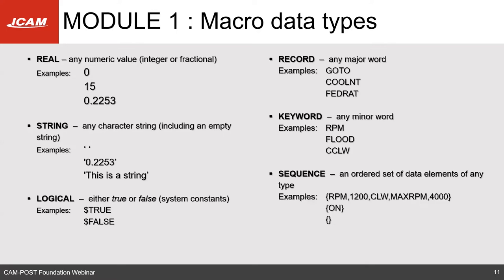ICAM supports several macro data types: reals, which can be both negative and positive and have decimal places; strings, which can be any character strings; logical or Boolean statements; records and keywords, which are synonymous with major and minor words; and sequences, which are sets of data that can be composed of any of the other macro data types. You can mix and match — strings with logical statements, records with reals — or have a blank sequence. Sequences are defined using curly brackets.